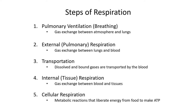Oxygen moves from the alveoli into the blood, and carbon dioxide moves out of the blood into the alveoli. These dissolved gases need to be transported. Oxygen is transported to tissues that require it, and carbon dioxide released as a waste product by these tissues is transported by the blood back to the lungs. Next, we have internal or tissue respiration — the movement of gases, carbon dioxide and oxygen, between the tissues and the blood.